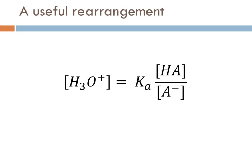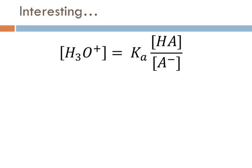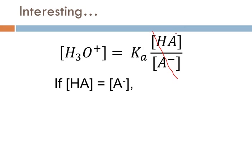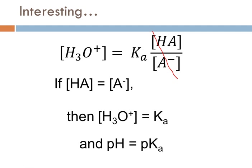I find it very helpful when doing buffer problems to rearrange the Ka expression to isolate the hydronium ion concentration — [H₃O+] = Ka × ([HA] / [A−]). There are many different ways to approach buffer problems; this is one I find works very well. If you want to use Henderson-Hasselbalch or other methods, you should get to the same answer. In the picture models, I had set it up so that the concentration of the weak acid equaled the concentration of the conjugate base. When they're equal, that ratio is one, which means the hydronium ion concentration equals Ka. Taking the negative log of both sides gives pH equals pKa for that buffer system.